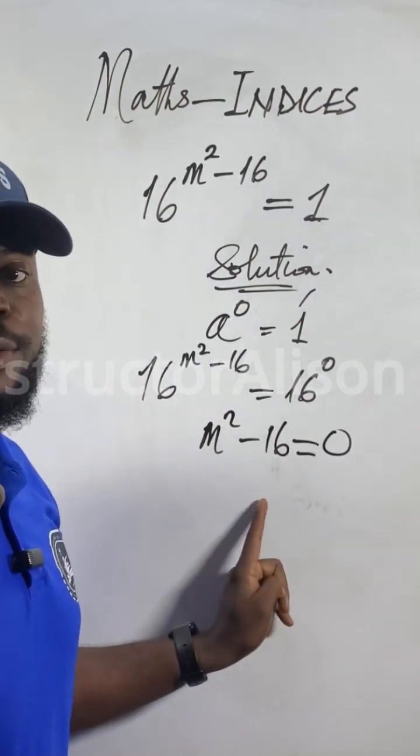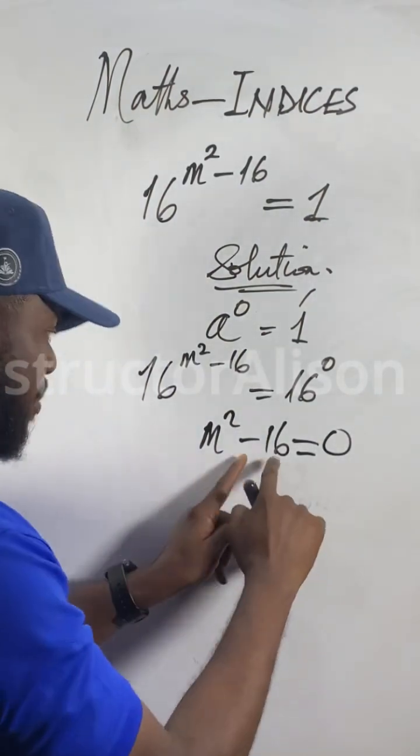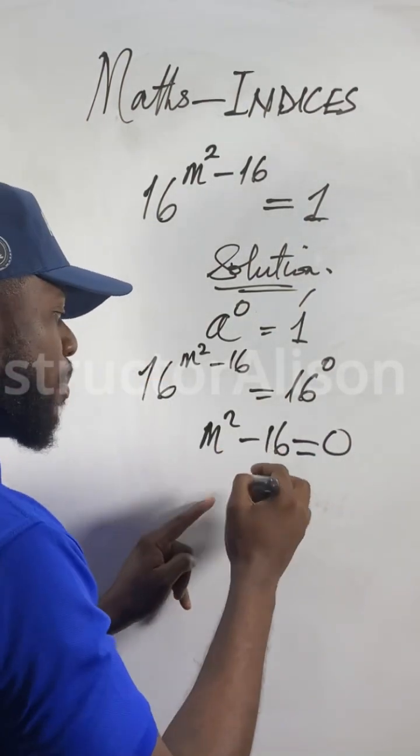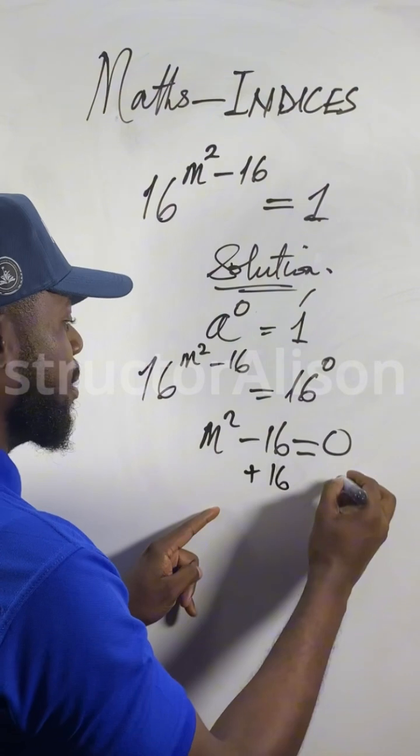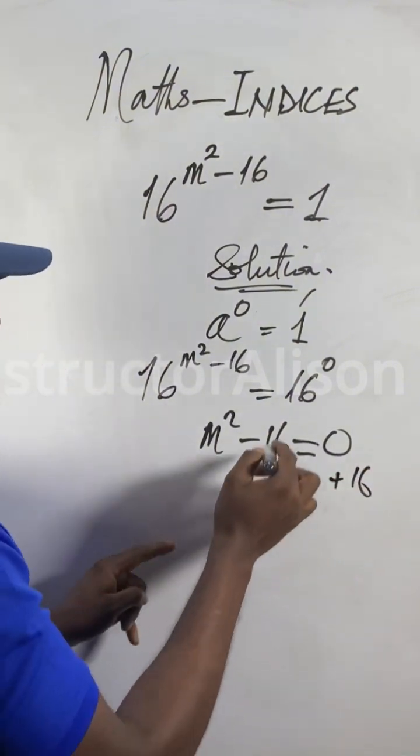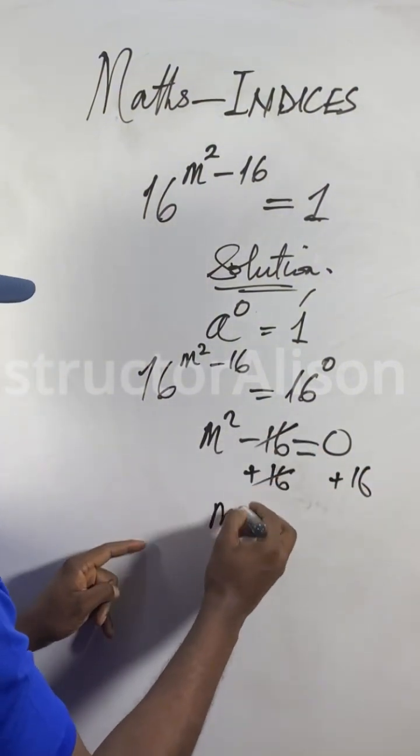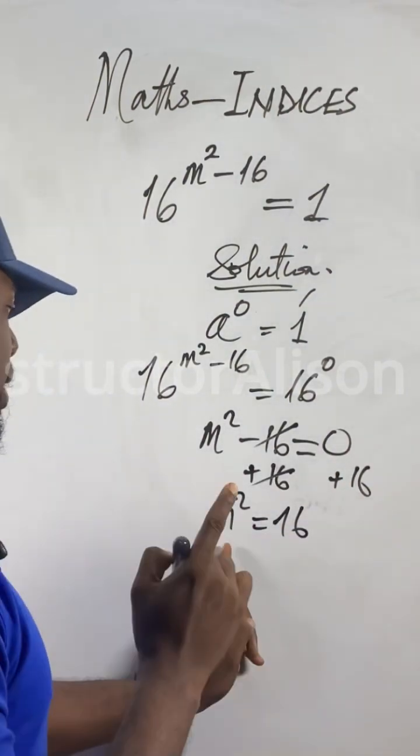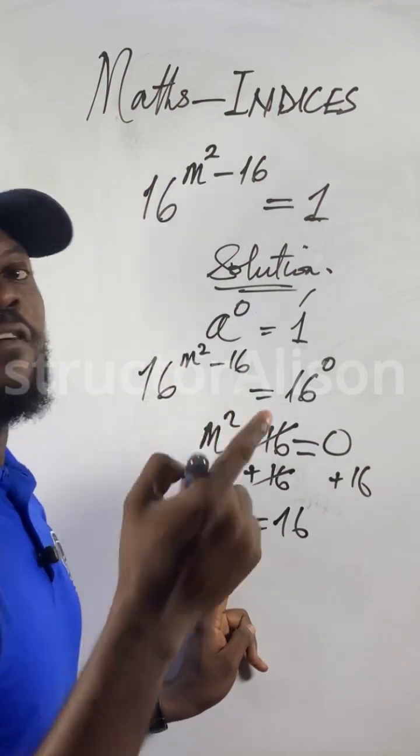What you will do now: carry this minus 16 to the other side and make it change to plus 16. Add 16 to both sides. When it adds 16 to both sides, this one and this one will cancel. m squared will be equal to 0 plus 16, which gives us 16.